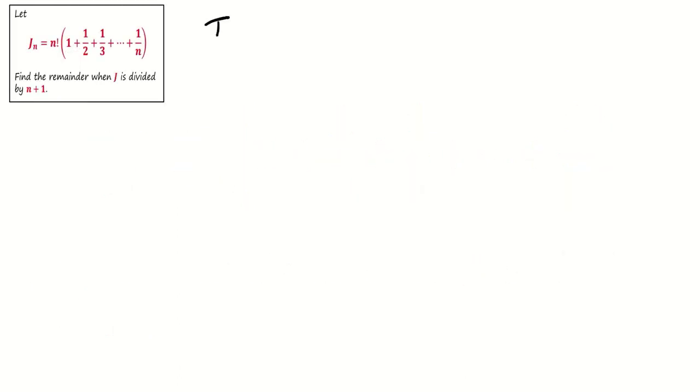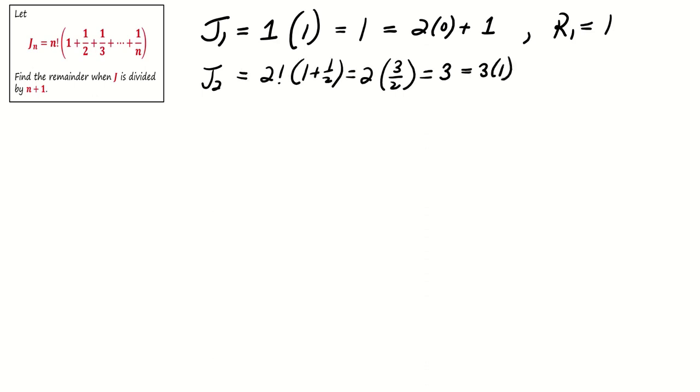From the given definition, J1 equals 1, and when divided by 2, it leaves a remainder of 1. J2 equals 3, and when divided by 3, it leaves a remainder of 0. J3 equals 11, and when divided by 4, it leaves a remainder of 3. So far, it may seem like there's no clear pattern to follow.